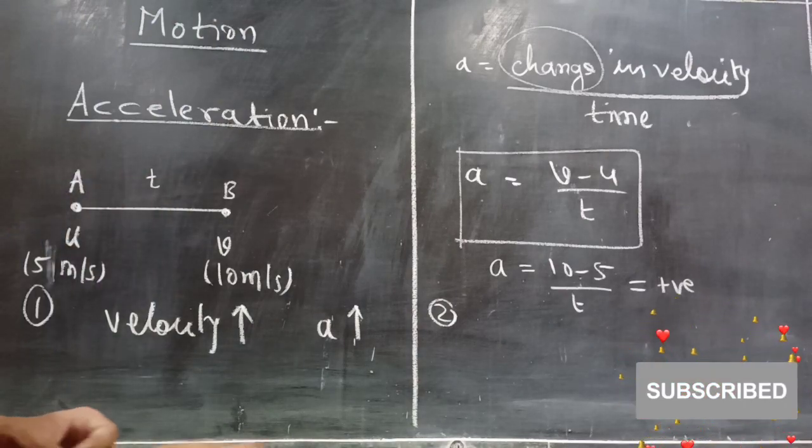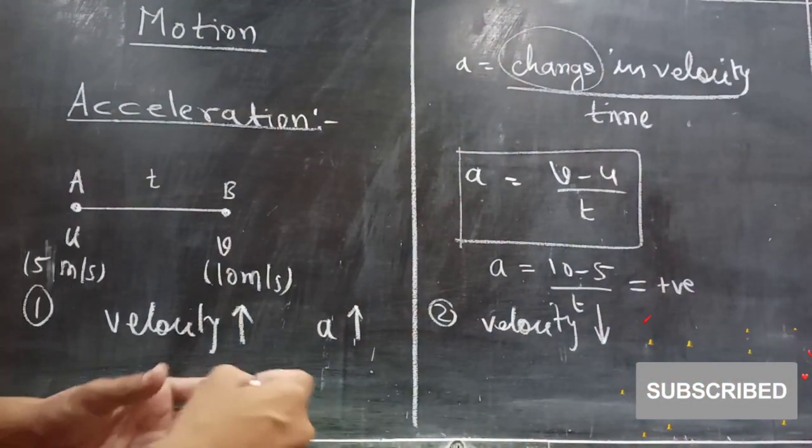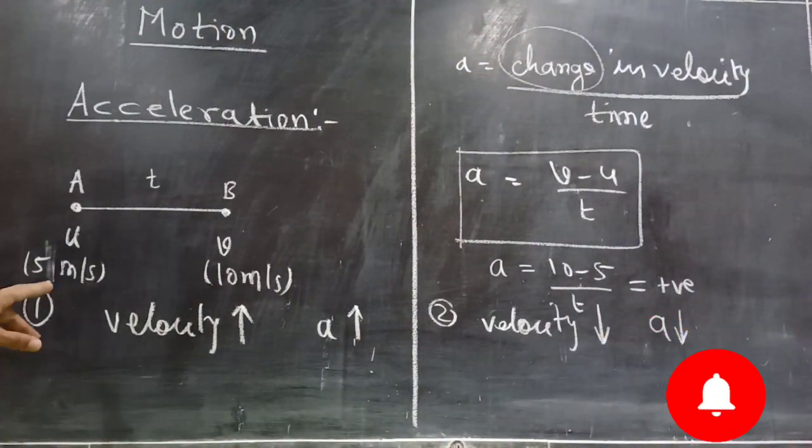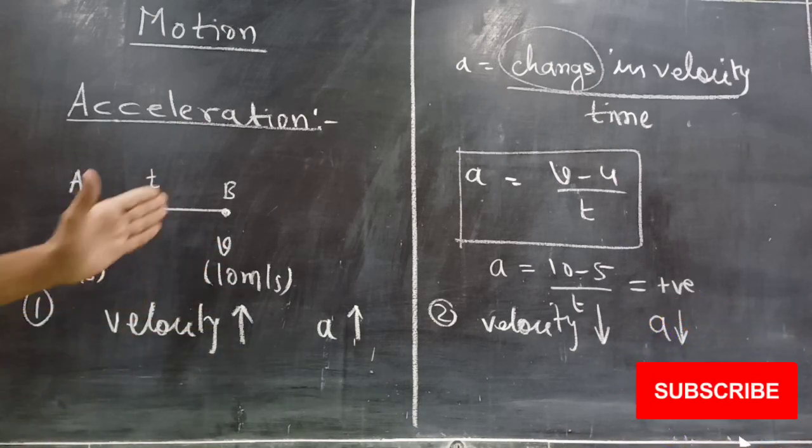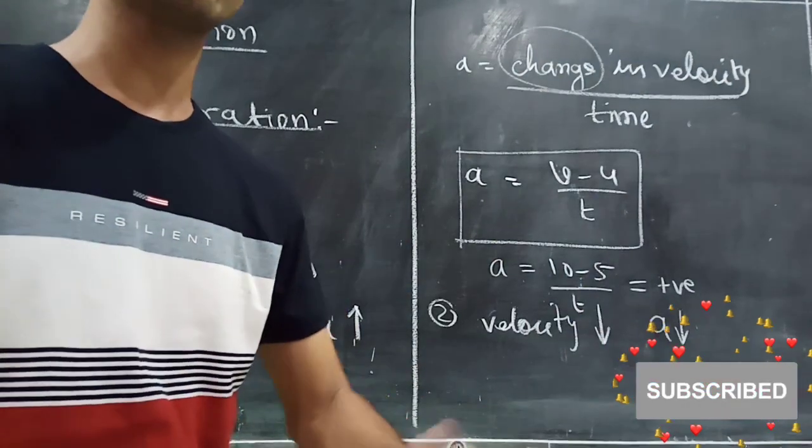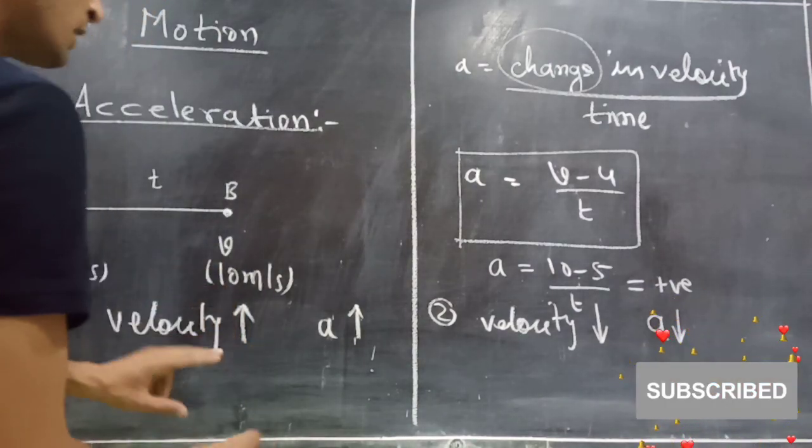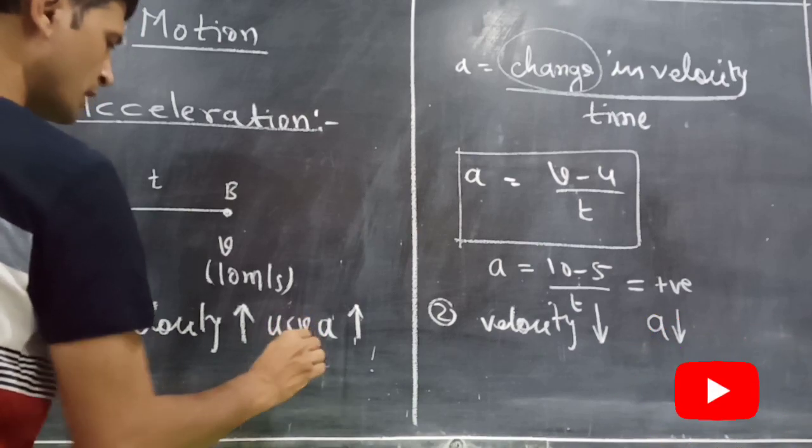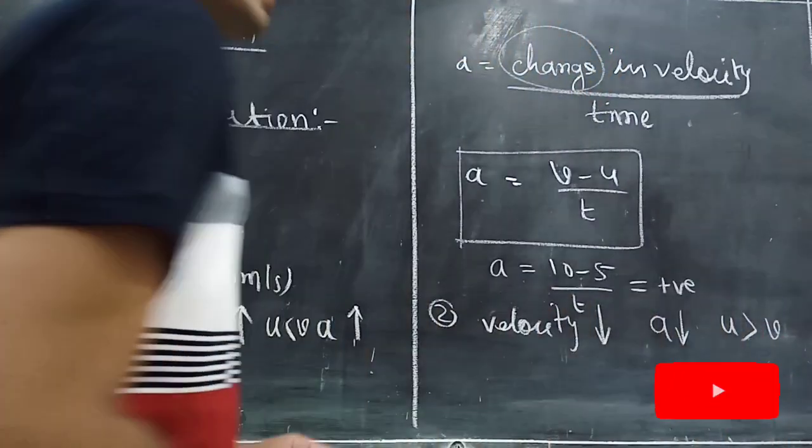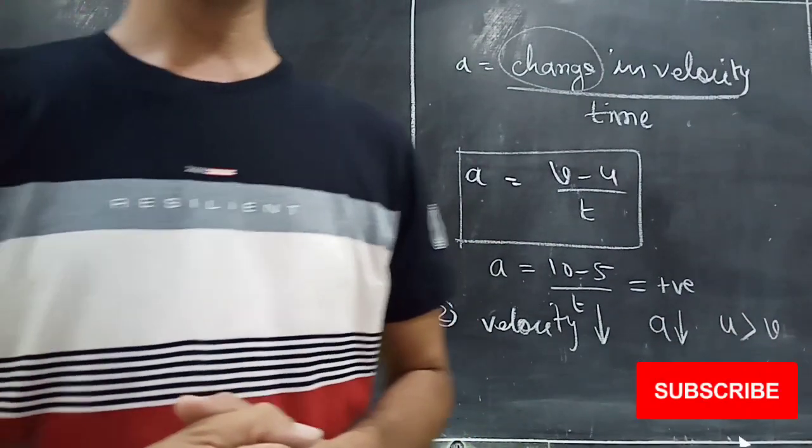Now we do the second case. Suppose velocity is decreasing. When velocity is decreasing, at that time acceleration is negative, which is called as retarding acceleration.